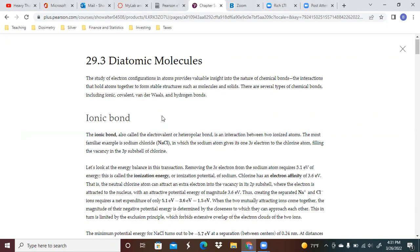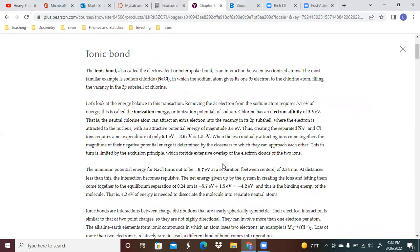Studying electron configurations in atoms provides valuable insight to the nature of chemical bonds, the interactions that hold atoms together to form stable structures such as molecules and solids. There are several types of chemical bonds, including ionic, covalent, van der Waals, and hydrogen bonds.